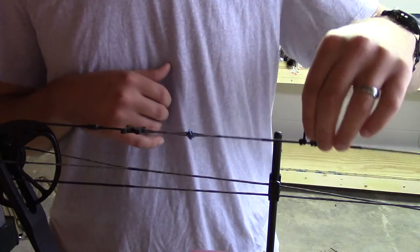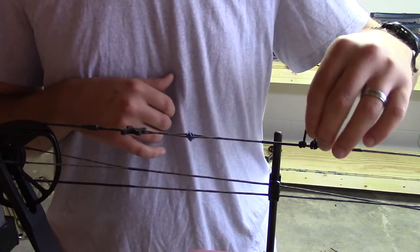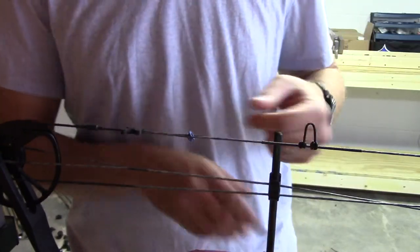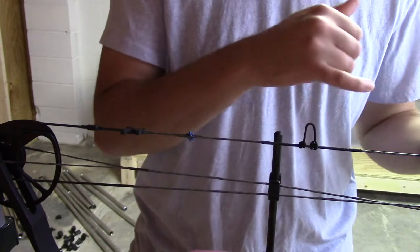If you give the string a little pluck, and they want to turn again, you can take the bow out of the press, but you can do it this way too. Just give them a little pluck, and if they start to turn again, you know you have some bigger issues on hand,